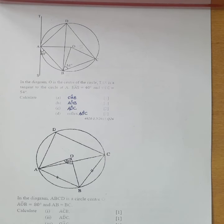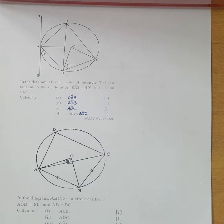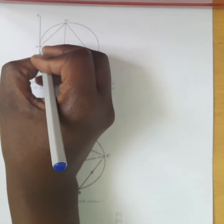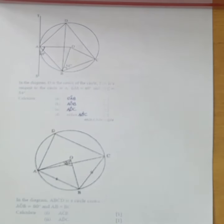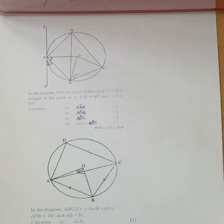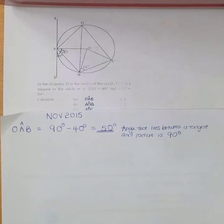Now we move to November 2015. The question reads: O is the center of the circle. TAS is a tangent to the circle at A. Angle BAC equals 40 degrees and angle OBC equals 54 degrees. We calculate angle OAB. Using the theorem that the angle between a radius and a tangent is 90 degrees: OAB equals 90 minus 40, which equals 50 degrees.